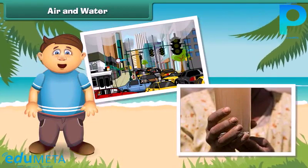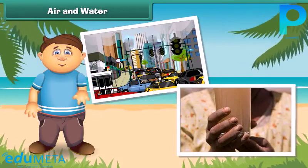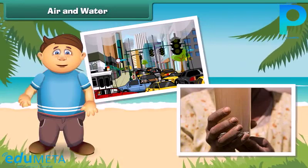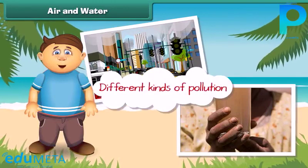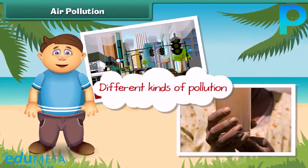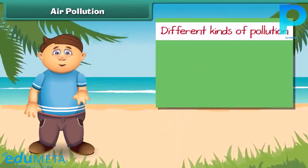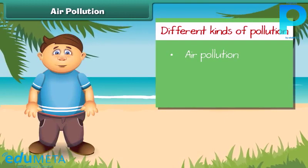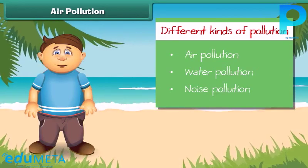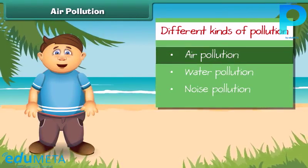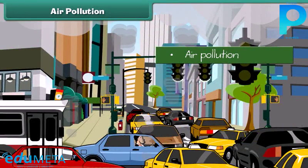Friends, as we all know, air and water mainly support life on Earth, but now these two are getting dirty day by day. As a result, there is no fresh air to breathe and clean water to drink. Pollution is mainly of three types: air pollution, water pollution, and noise pollution. Let's first know about air pollution in detail.